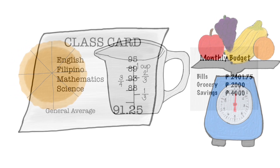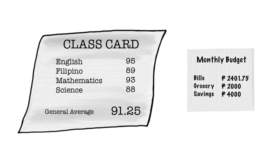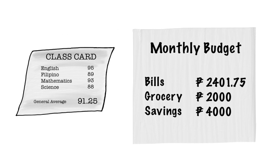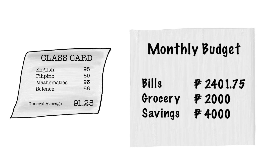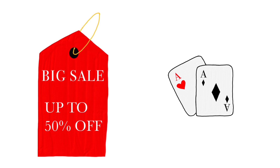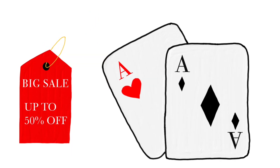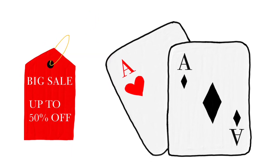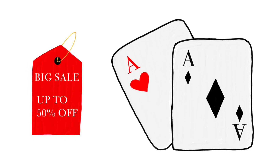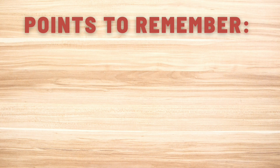We apply decimal in the following situations: when we compute our grades at school, when we read the results of laboratory tests, or when we write and compute money. We apply percent in the following situations: when we ask for discounts during sales, when we compute the probability of getting a king or a queen in a deck of cards, or when we multiply the weight of a criterion in a certain contest or competition.